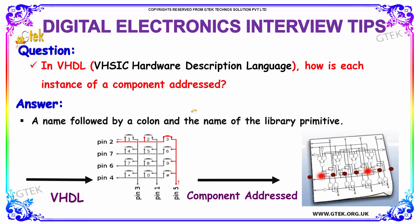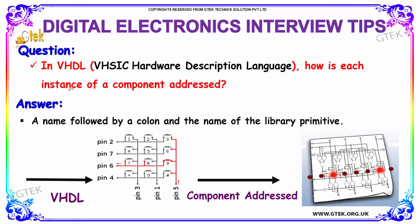In terms of VHDL — VHSIC Hardware Description Language — how is each instance of a component addressed? The answer is: a name followed by a colon and the name of the library primitive. Each instance of a component is addressed based on the colon and the library primitive of the name.